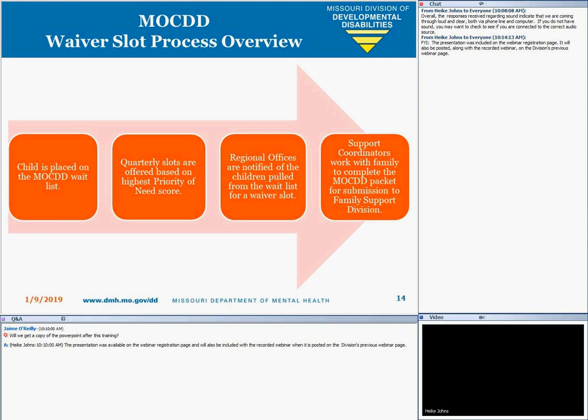On occasion, a child's medical review team determination may be expired and a new determination must be completed with documentation provided. After approval by Family Support Division, the Federal Programs Unit notifies the regional office and a MO-KID waiver slot is assigned. One frequently asked question is whether families must have private health insurance in the MO-KID waiver. The answer is that families should be encouraged to obtain and maintain their private health insurance, but they are not required to do so for participation in the MO-KID waiver.